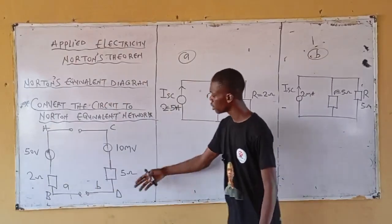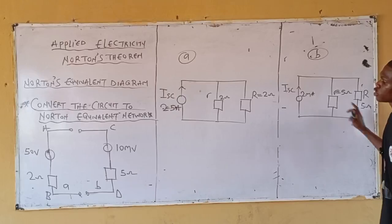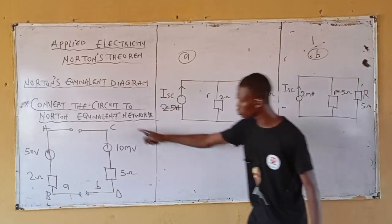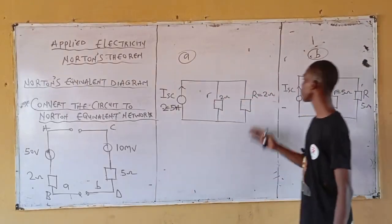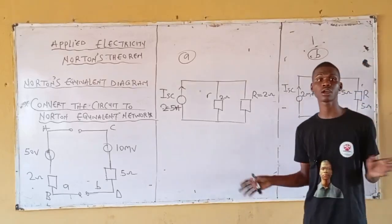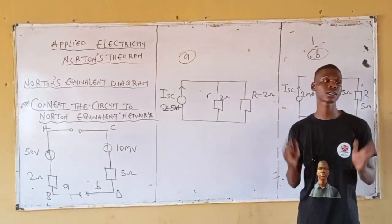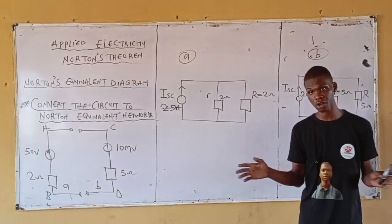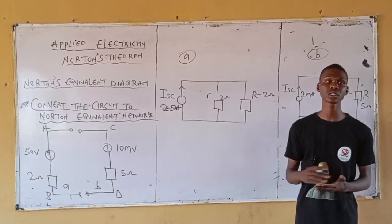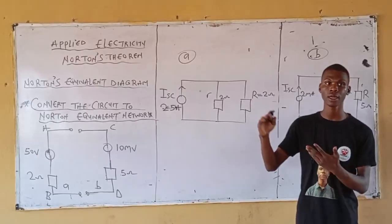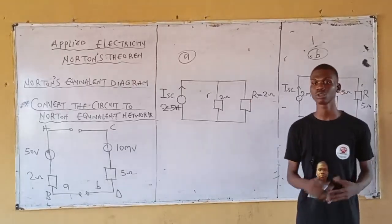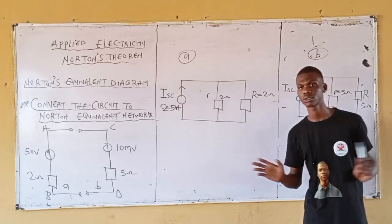Similarly for B: your load resistor is 5 ohms, your equivalent resistance is 5 ohms, and the current through the load resistor is 2 milliamps. For Norton's theorem, the steps remain the same — nothing is changing. Given any question, use Norton's theorem to simplify, follow the steps through to the last step, and nothing is changing.